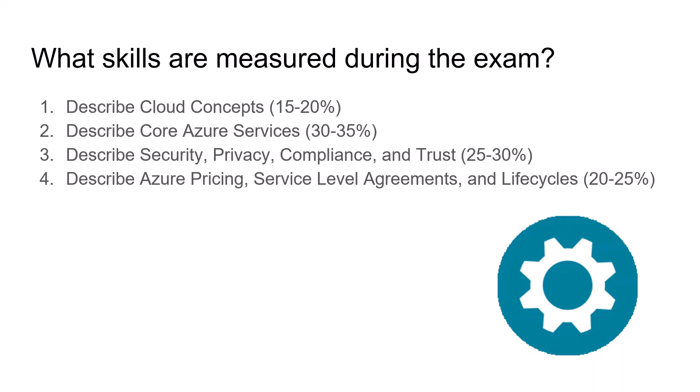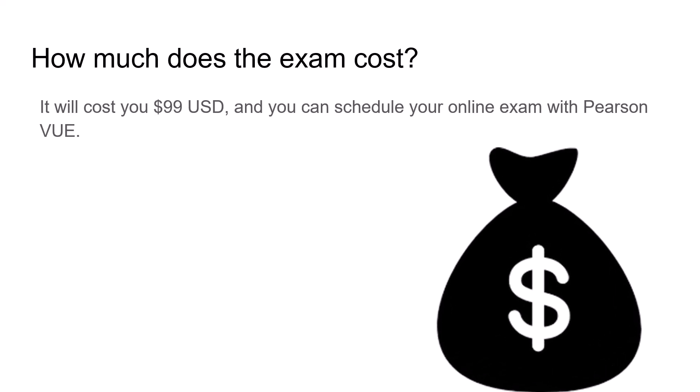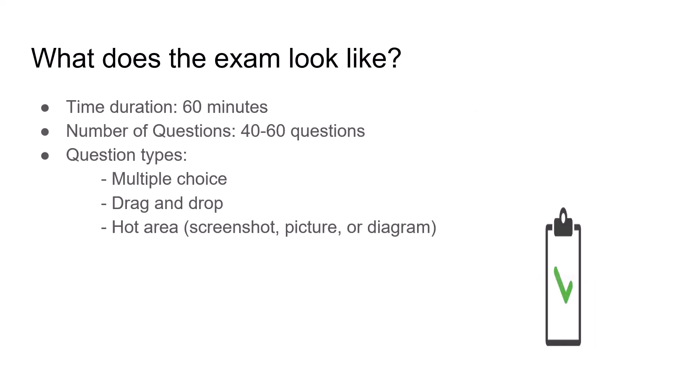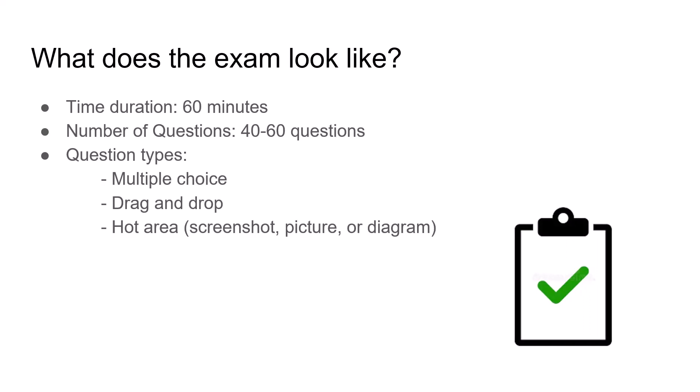How much does the examination cost? It will cost 99 US dollars and you can schedule your online exam using Pearson VUE or Certiport. The exam gives you 60 minutes to answer anywhere between 40 to 60 questions — though I personally had only 34 questions in my real exam, which was quite a nice surprise.